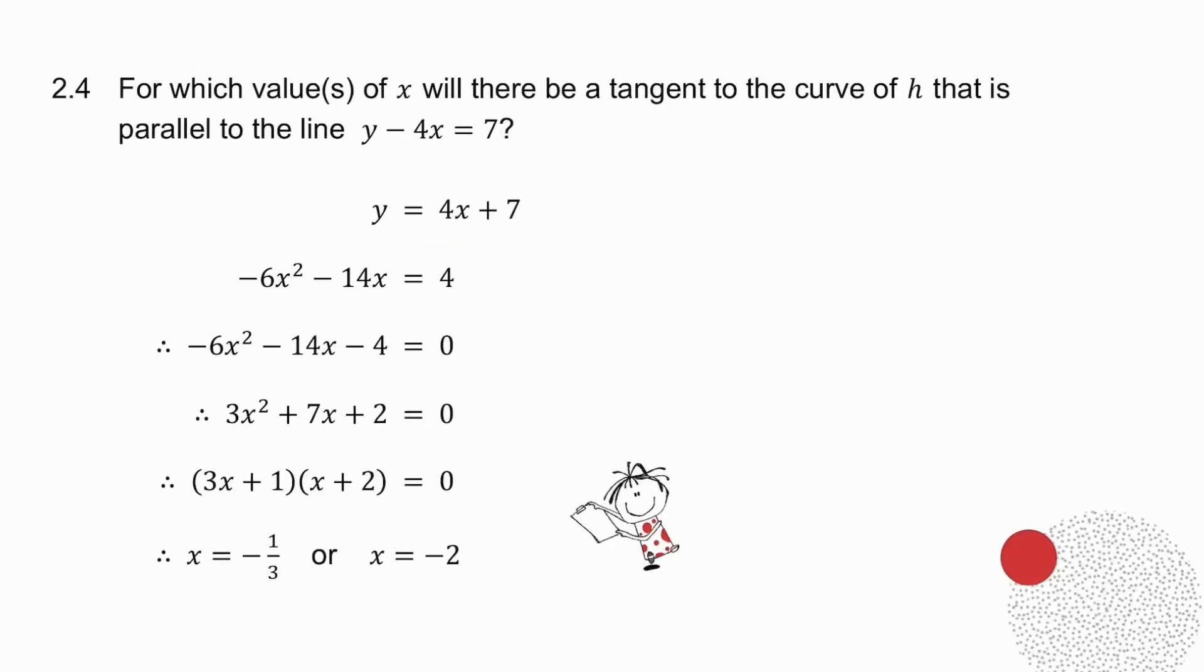2.4 says for which values of x will there be a tangent to the curve of h that is parallel to the line y minus 4x equals 7. So if y minus 4x is equal to 7, it means that y is equal to 4x plus 7. Now the gradient of this graph is 4.